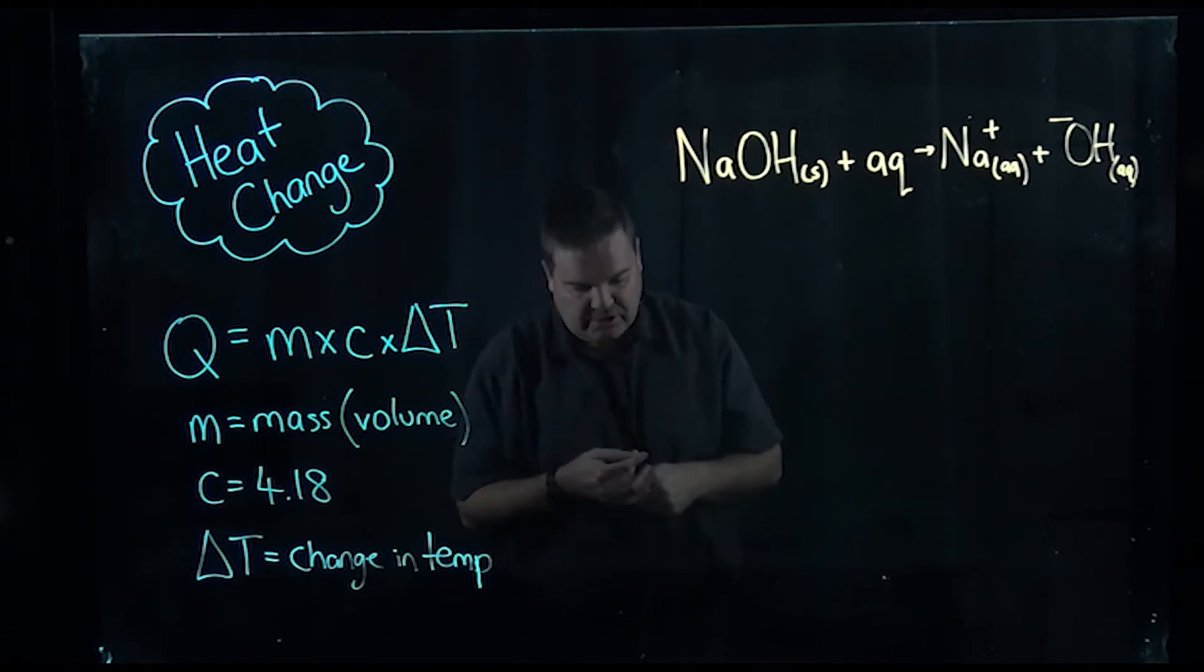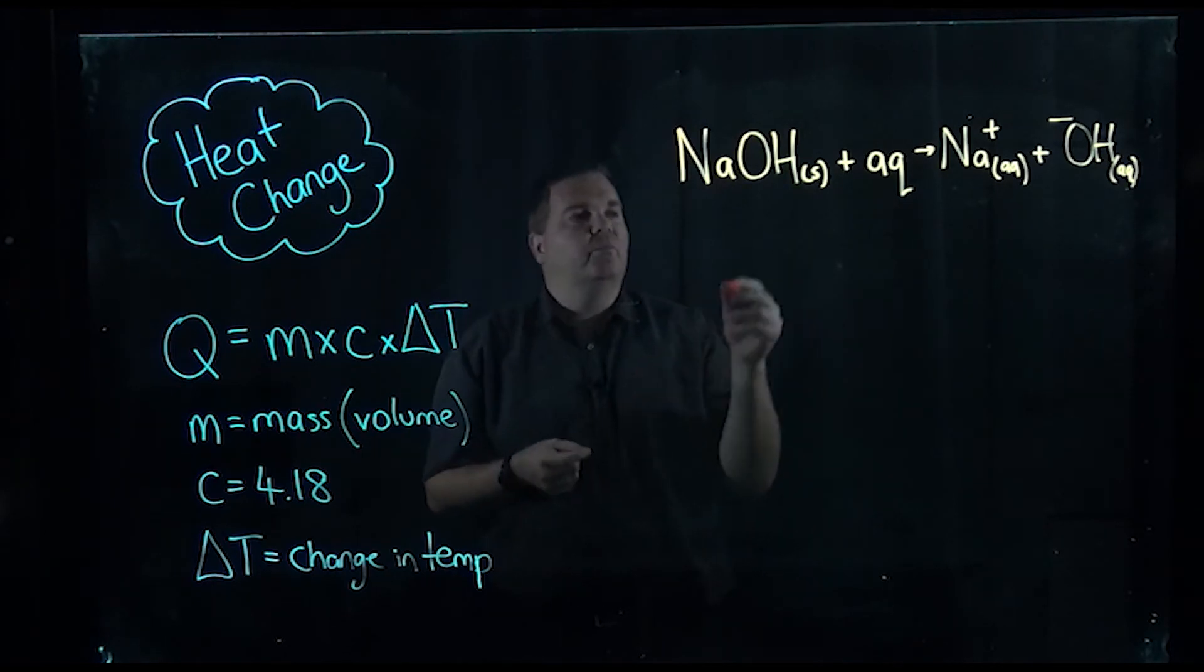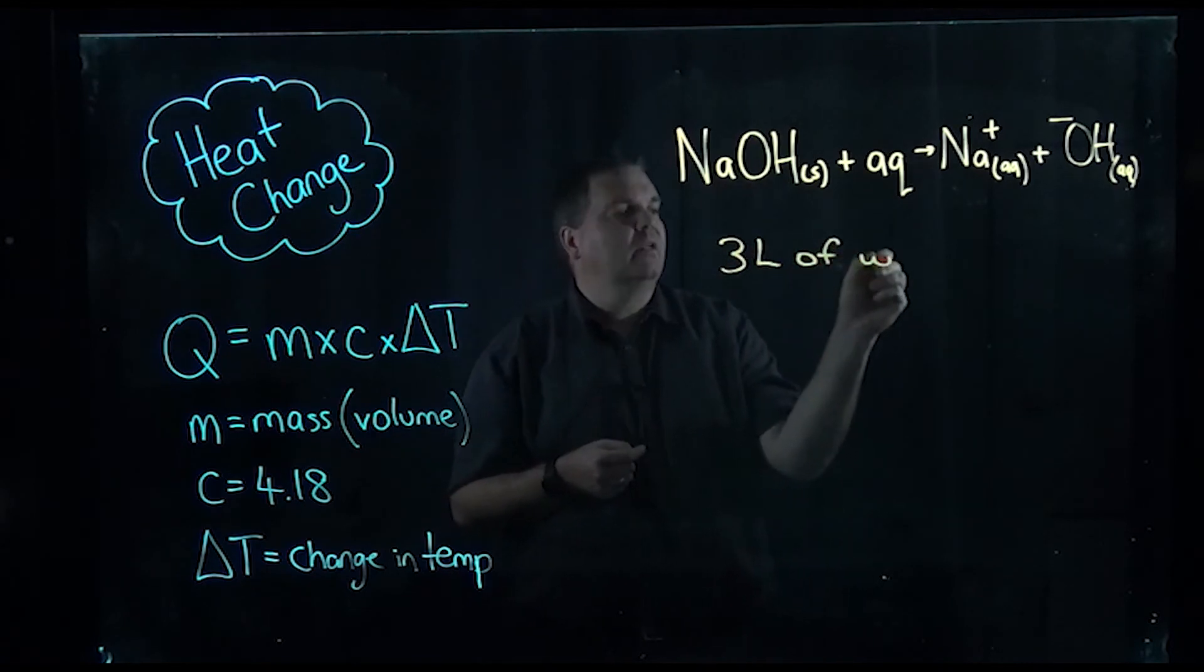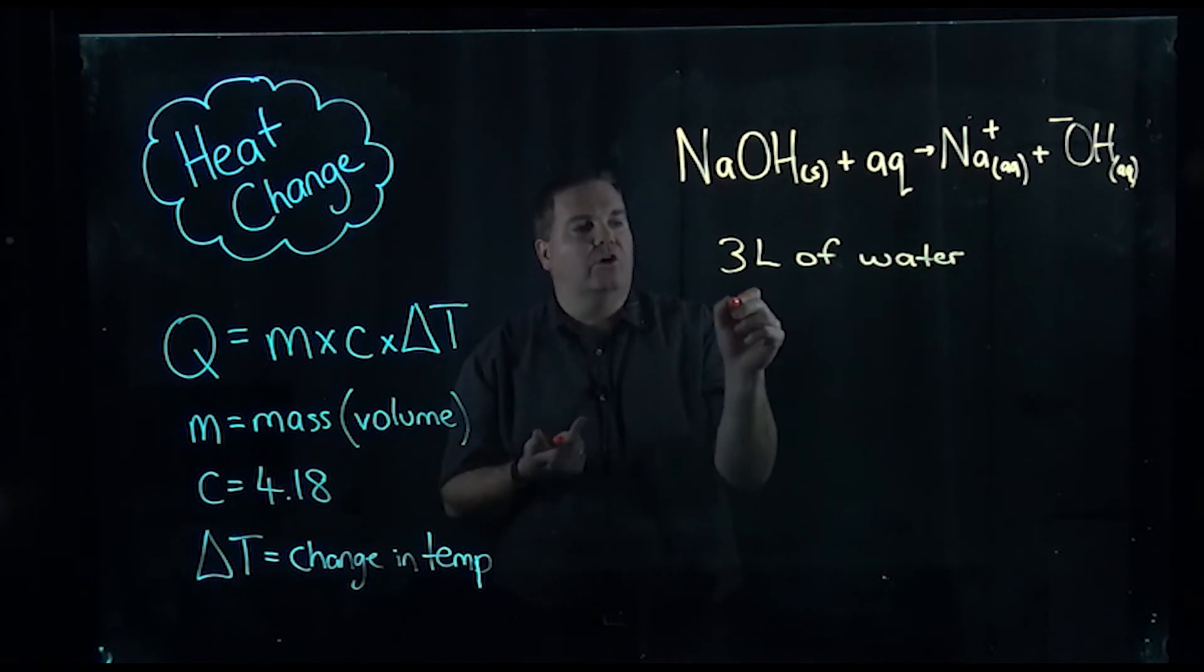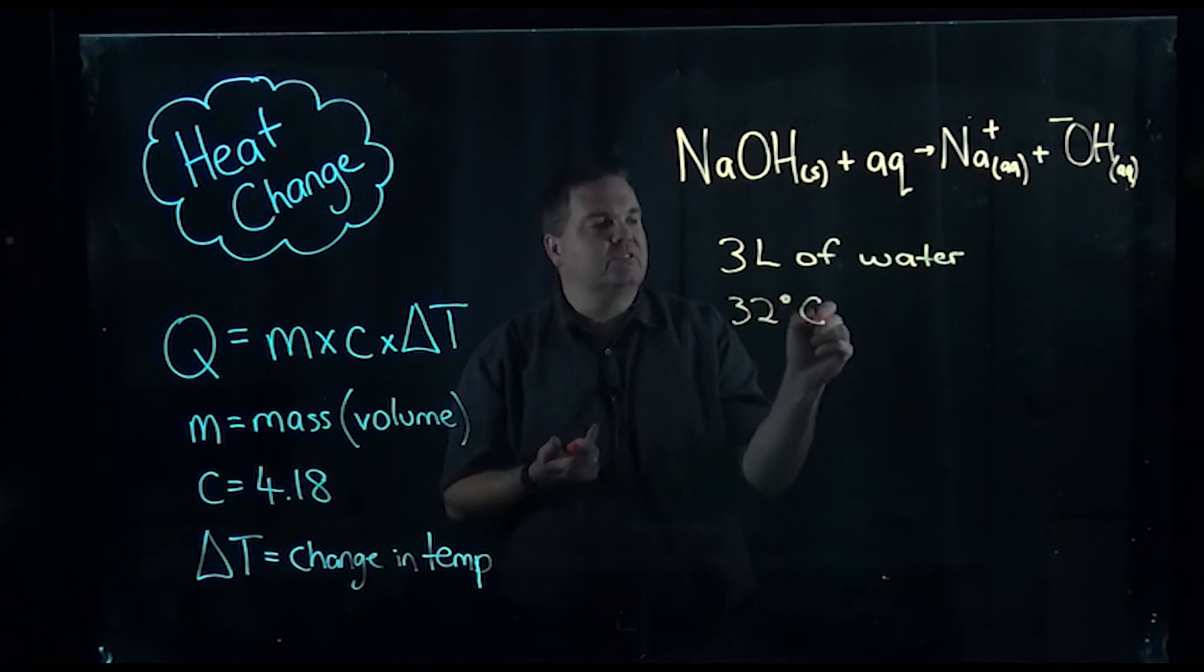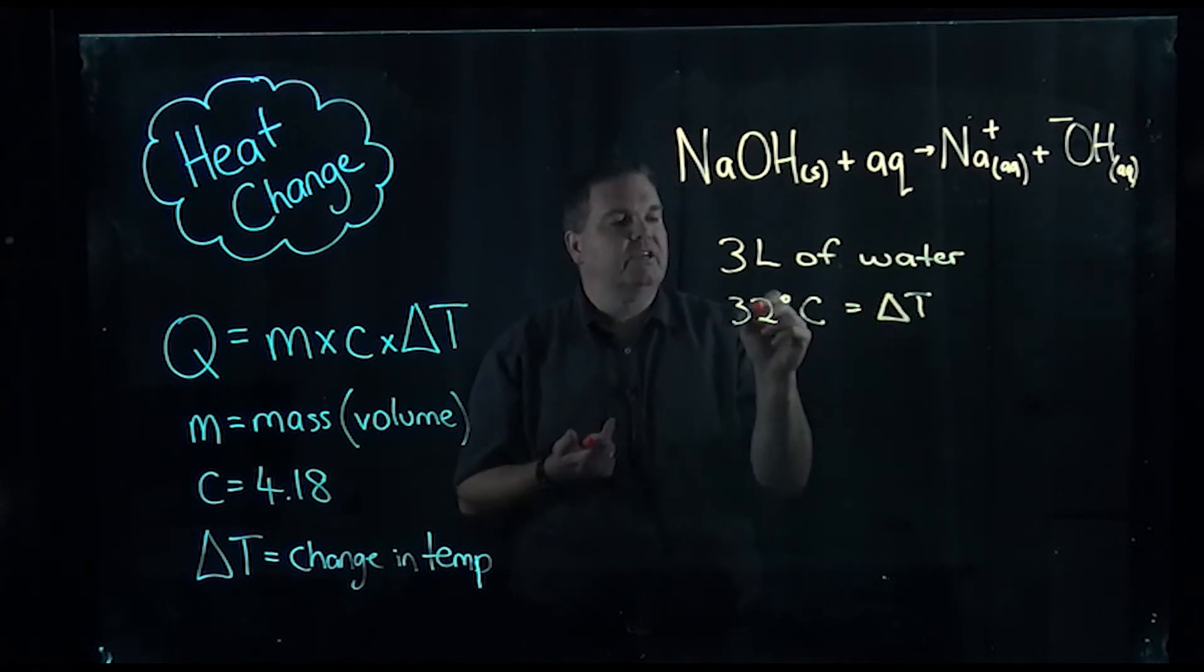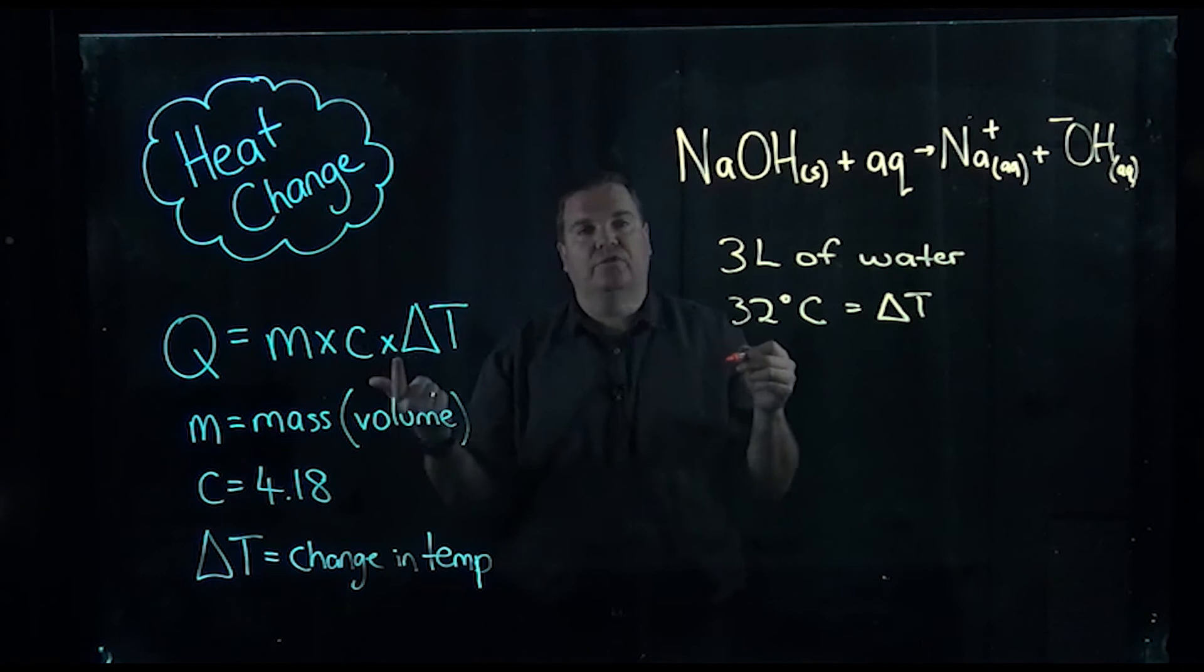So we can use this to calculate energy changes or heat changes in reactions. I'm going to do one here for this reaction with the sodium hydroxide. If we've got some sodium hydroxide and we dissolve that in three liters of water, and we have a temperature change of 32 degrees Celsius. So I don't know, we started at 18 degrees and we ended up at 50 degrees.